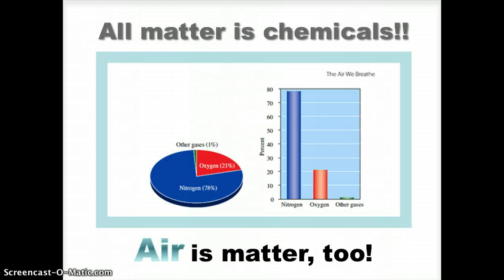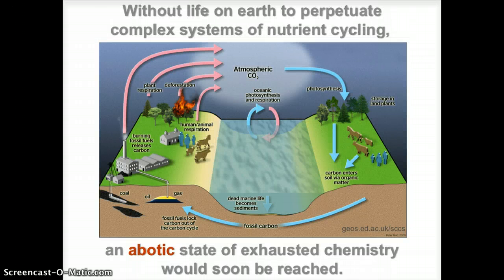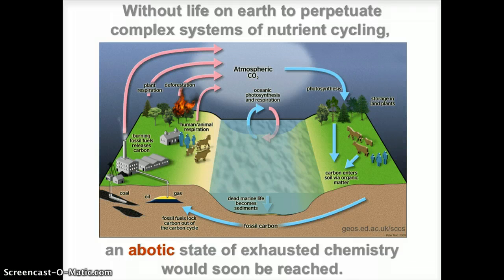Matter occupies space and has mass. Matter is made up of atoms, and the atoms are recycled around the Earth over time. While not all chemical reactions involve living organisms, life on Earth is a key part of the cycling of elements between the atmosphere — zone of air — the hydrosphere — zone of water — and the lithosphere — zone of rocks. Indeed, the biosphere, the zone of life, includes all three.